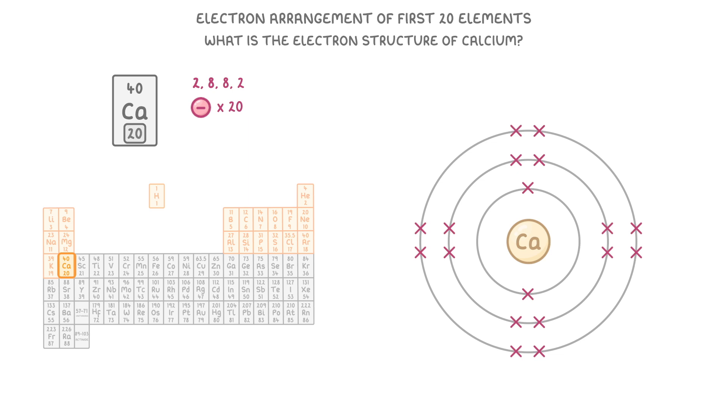However, even though our calcium atom still has 20 positive protons, it now has only 18 negative electrons. Because remember, it just lost two of them. So overall, it's going to have a 2 plus positive charge. And so we call it a calcium ion, rather than a calcium atom.